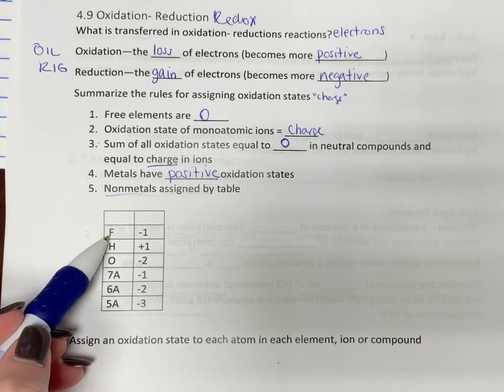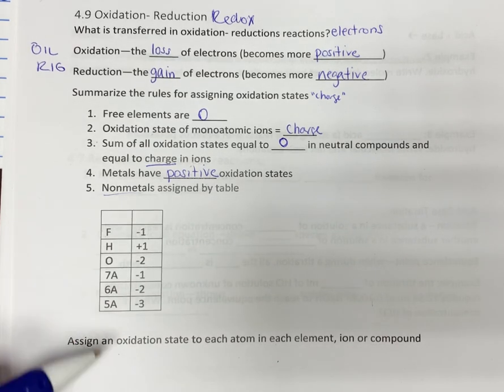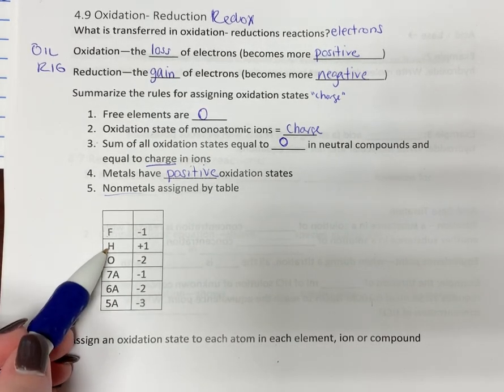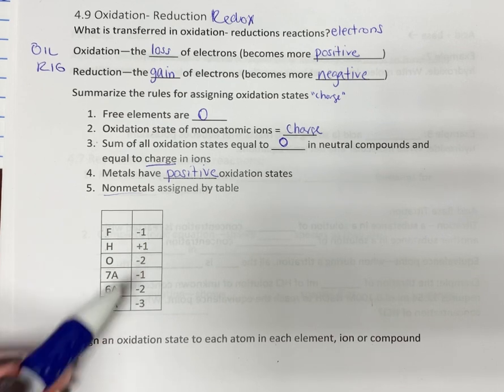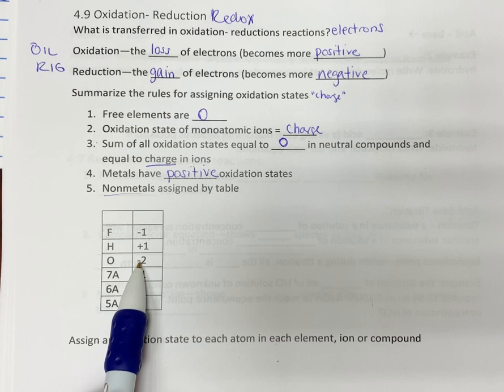So if any of your compounds in the equation have fluorine, you find the fluorine and you put a negative one charge on it. So that's the number you put above it. If you have hydrogen anywhere in the table, it's going to be plus one. If you have oxygen, it's going to be minus two.